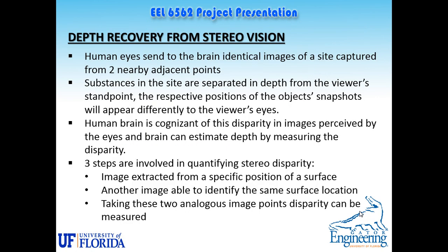Next we move on to stereo vision. The concept is that human eyes send the brain identical images of a scene captured from two nearby adjacent points, and objects are separated in depth from the viewer's standpoint. The respective positions of object snapshots will differ for each eye, and the brain estimates depth by measuring this disparity. Three steps are involved: extracting an image from a specific surface location, identifying the same location in another image, and measuring the disparity between those two points.